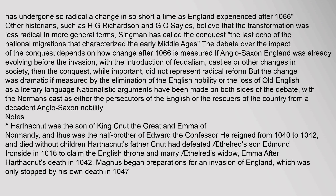Nationalistic arguments have been made on both sides of the debate, with the Normans cast as either the persecutors of the English or the rescuers of the country from a decadent Anglo-Saxon nobility. Harthaknut was the son of King Canute the Great and Emma of Normandy, and thus was the half-brother of Edward the Confessor. He reigned from 1040 to 1042 and died without children. Harthaknut's father Canute had defeated Athelred's son Edmund Ironside in 1016 to claim the English throne. After Harthaknut's death in 1042, Magnus began preparations for an invasion of England, which was only stopped by his own death in 1047.